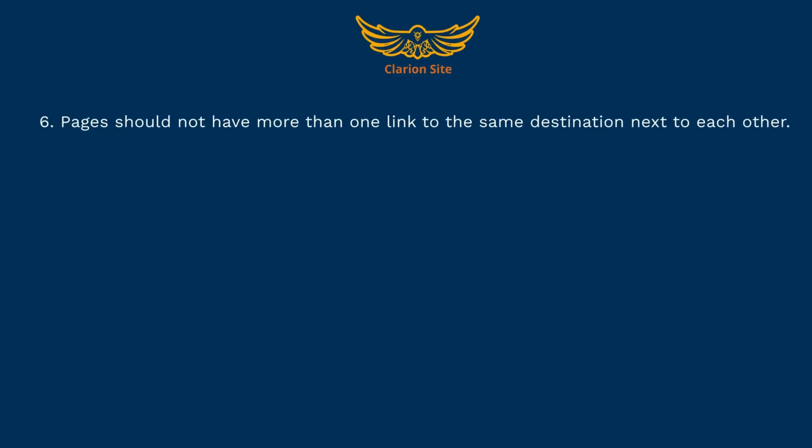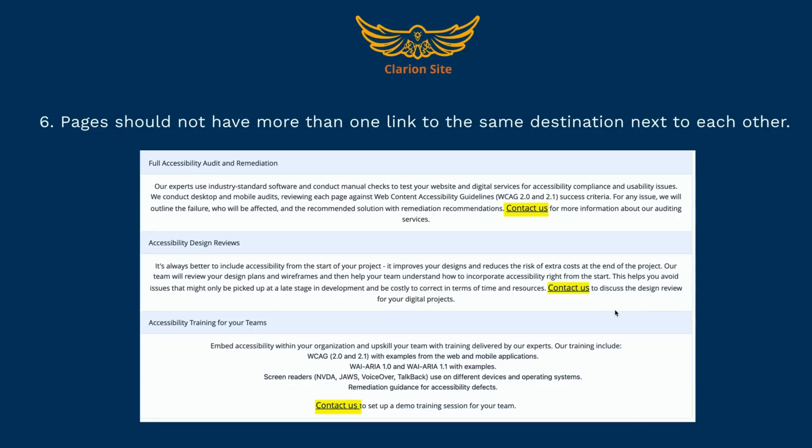Guideline 6: Pages should not have more than one link to the same destination next to each other. In this example, the link "contact us" appears in three different sections and is in tab order. This means if a screen reader user tabbed through the page, this link would be announced three times one after another, which is definitely not a good user experience.